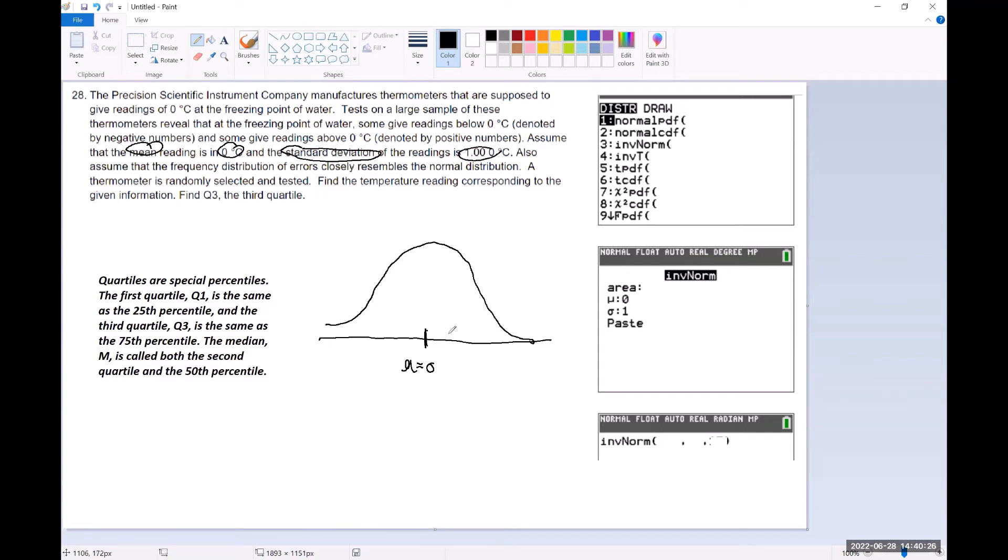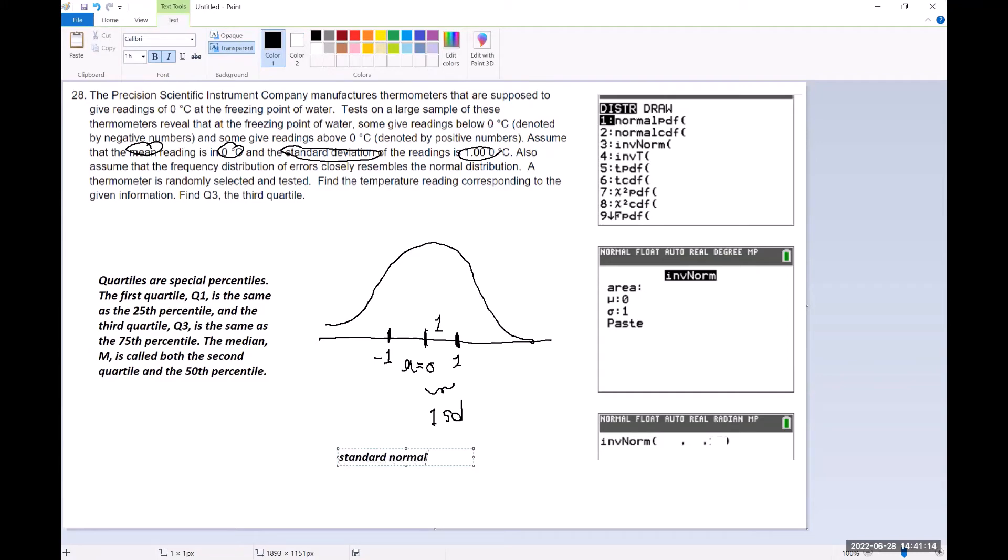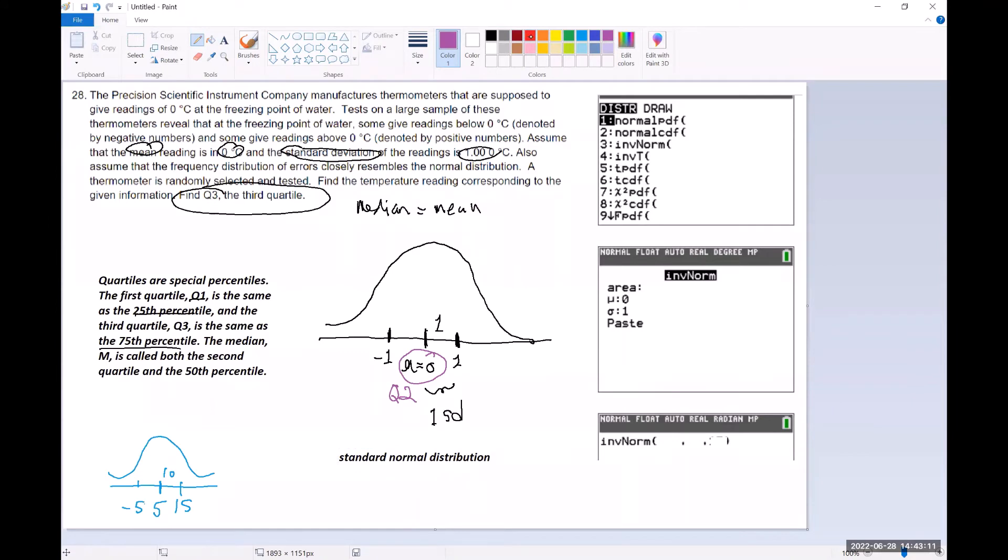The standard deviation of the readings is one. So if I go over one unit, this is one unit—that's also the measurement of one standard deviation. If you go back one unit the other way, this is minus one, but that's going to be one standard deviation to the left. So what we end up with then in this case is the very well-known standard normal distribution.